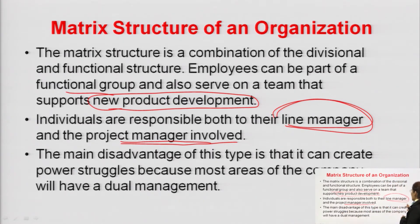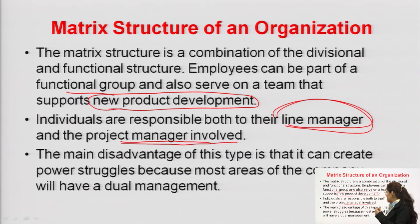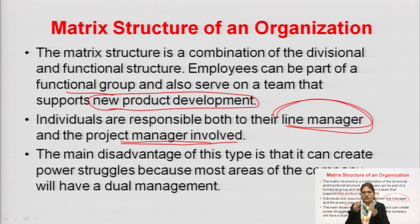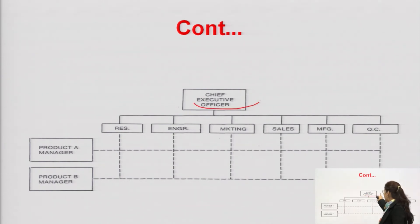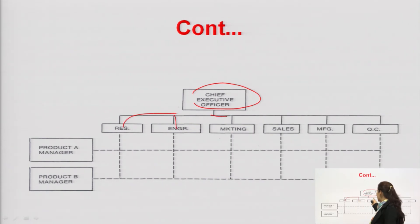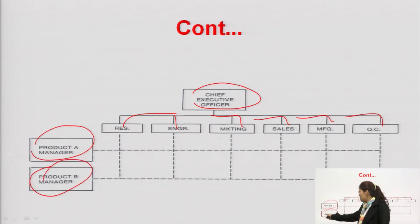The main disadvantage of matrix organization is that it can create power struggles because most areas of the company will have dual management. One person having two bosses means there may be conflict or confusion in the employee's mind about which task is important and whose guidance to follow. In the matrix structure diagram, the CEO oversees an organization divided on the basis of different functional areas, and at the same time it is also divided on the basis of product — so both functional and divisional are involved in the matrix structure.